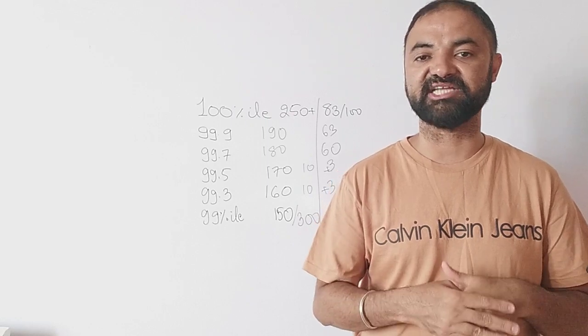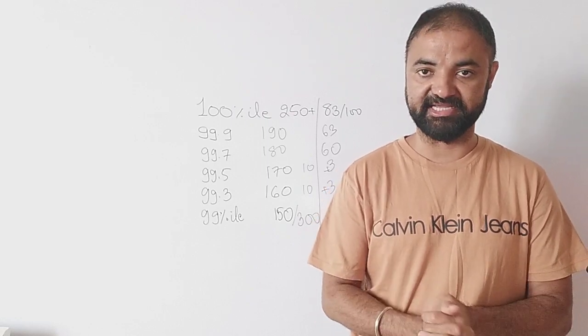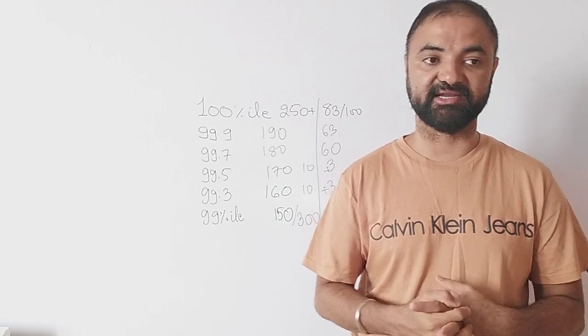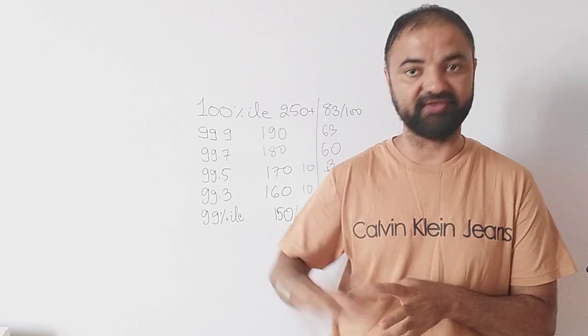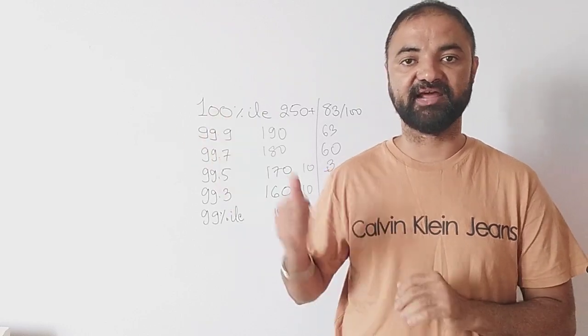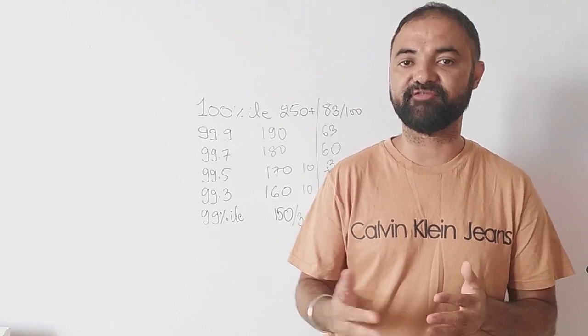But I personally believe around 70 questions plus correct you will reach 100 percentile. Obviously the main target if you want to be rank 1 in the CAT paper, the target has to be 99.99 which is 100 percentile. The target will have to be around 75 to 80 questions right - correct, not attempt, correct.